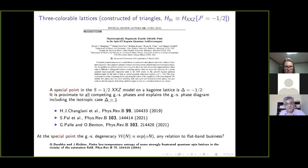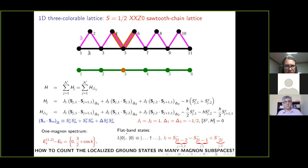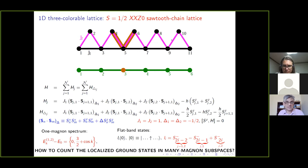A natural question arises: whether this system has any relation to flat band systems, because for the isotropic Heisenberg system we can observe a dispersionless one-magnon band and such a huge degeneracy in the vicinity of the saturation field. We immediately considered a simple model — a one-dimensional three-colorable lattice, which is just the sawtooth chain with a special Hamiltonian with exchange anisotropy equal to one half. We can easily calculate the one-magnon spectrum and find that the lowest energy branch is really dispersionless — it is really flat.